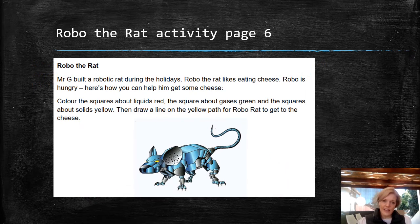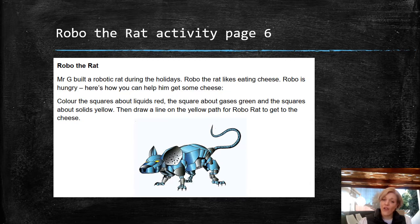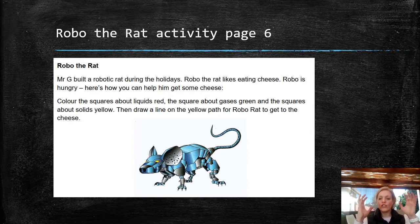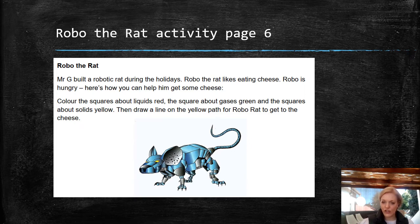On page six of your booklets there's a little activity on phases of matter covering what you've just learned. You need to color the squares about liquids red, the squares about gases green, and the squares about solids yellow. Then draw a line on the yellow path for Robert the Rat to get to the cheese — it has to be a solid. This is a nice little activity to summarize what you've learned. Complete it and then we'll carry on with the next section.